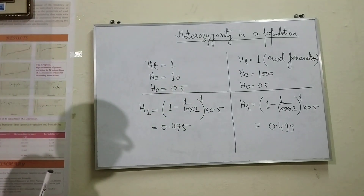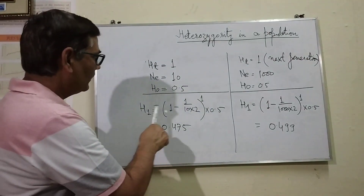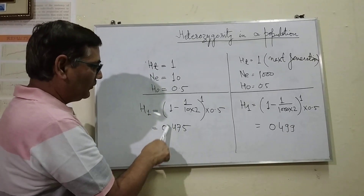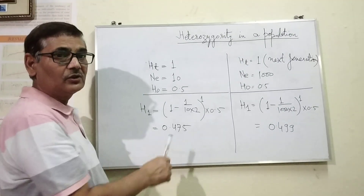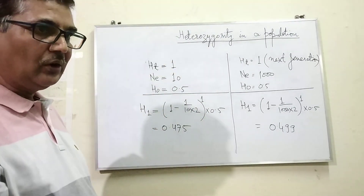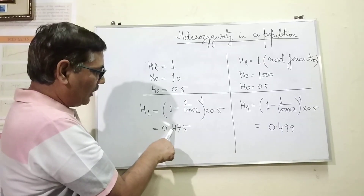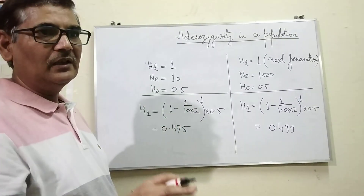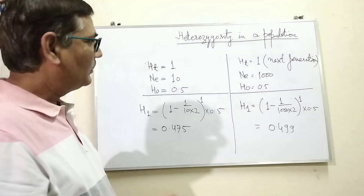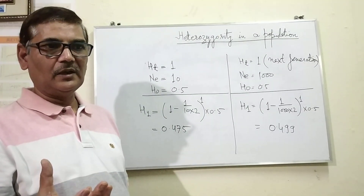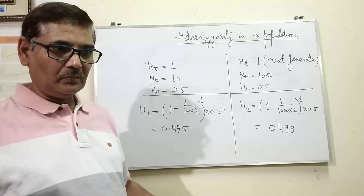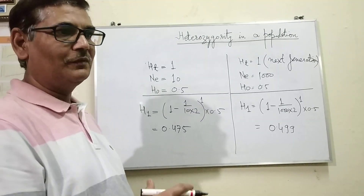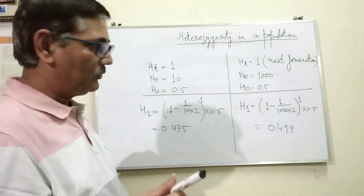So what we are observing is that when the number of individuals is very few, there is much influence on the heterozygotes. Heterozygotes has gone down from 0.5 to 0.475 — there is a considerable decrease. It is happening only because fewer individuals are there and close matings will occur.